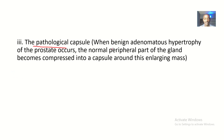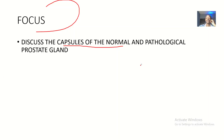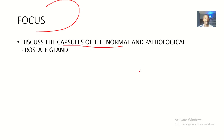The pathological capsule forms when benign adenomatous hypertrophy of the prostate occurs. The normal peripheral part of the gland becomes compressed into a capsule around this enlarging mass. So that's it about the capsules of the normal and pathological prostate gland — the true capsule, false capsule, and pathological capsule. I'll see you guys in the next tutorial where I'll be talking about the lobes of the prostate gland. Don't miss out!